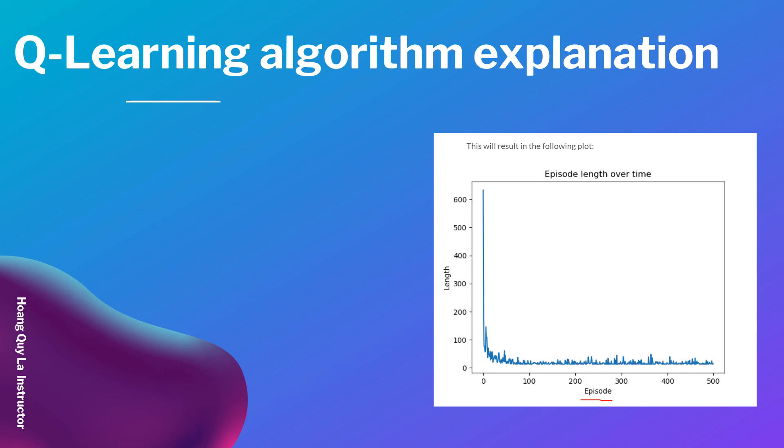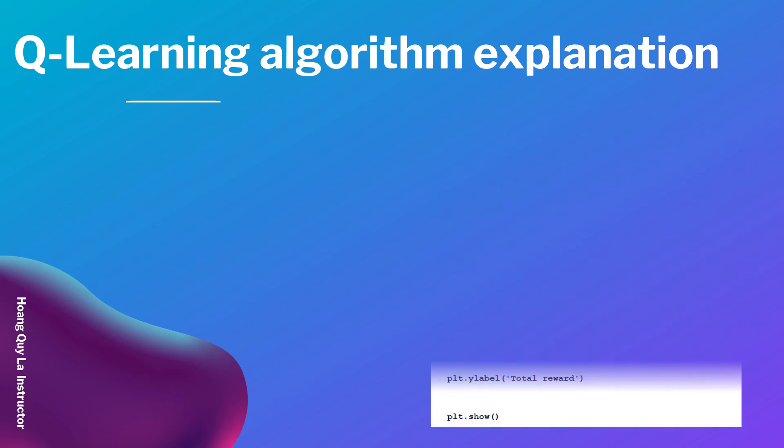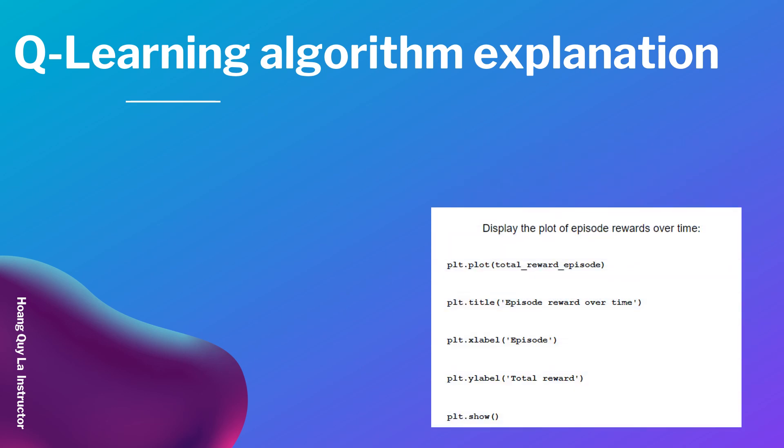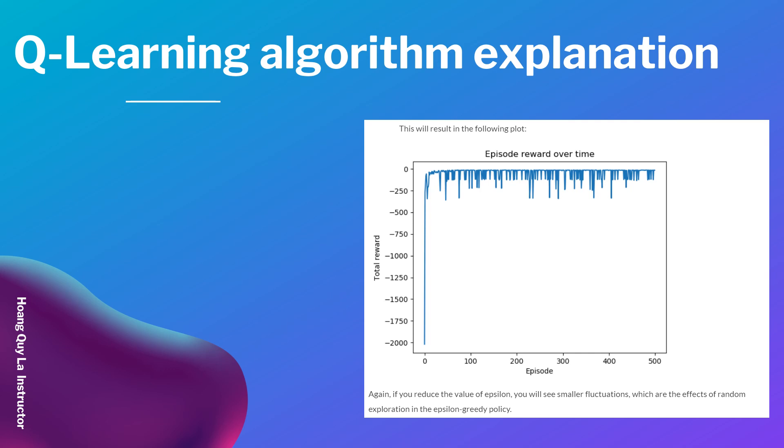Then in the episode we need to display the reward as well. We use the same function. And this is how the plot looks like. Again, if you reduce the value of epsilon, you will see a smaller fluctuation with other effects of random exploration in the epsilon-greedy policy.